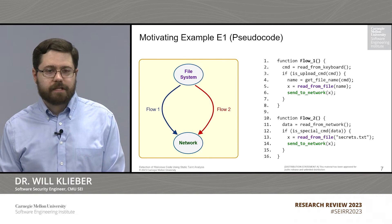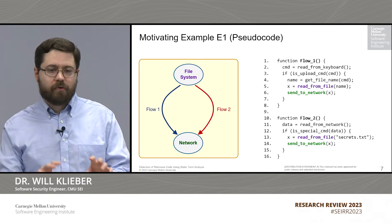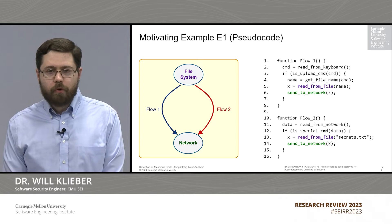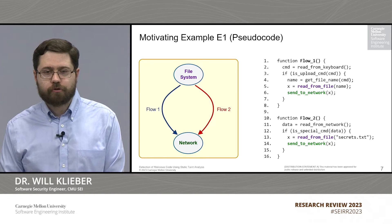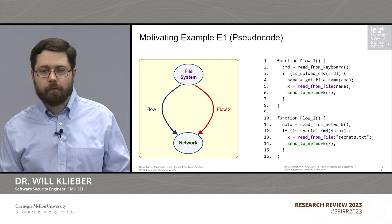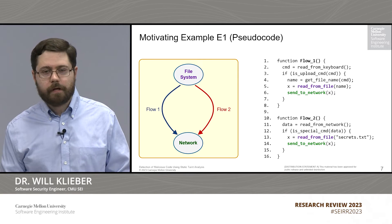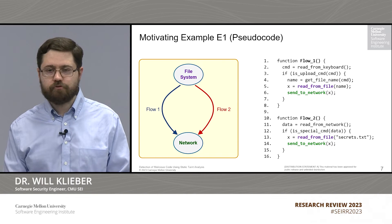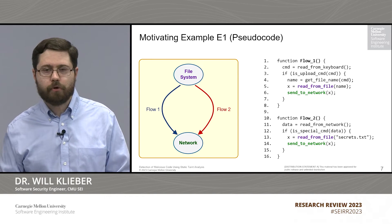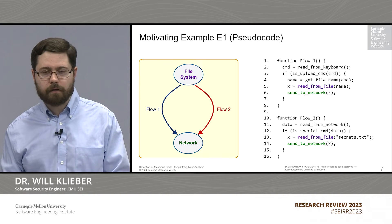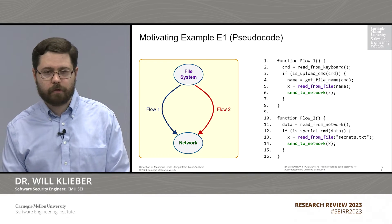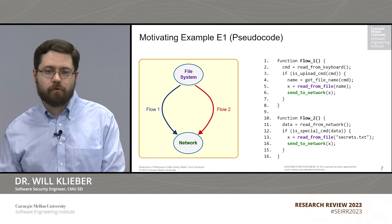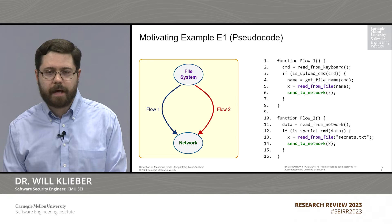Here's a motivating example. We see that there are two flows from the file system to the network. In flow one, looking at line two of the source code snippet, we first read a command from the keyboard, then check to see if that command is an upload command. If it is, we extract the file name the user asks to upload, read the contents of that file, and then send that data to the network. This looks like a pretty benign flow — we only send file data over the network if the user specifically asks to do so.